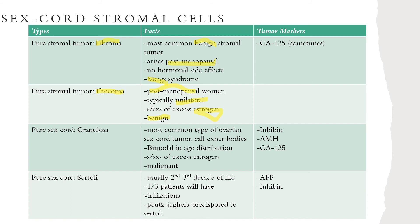The granulosa cell tumor is the most common type of ovarian sex cord tumor. It has a bimodal age distribution with adult and juvenile subtypes. On histology, these tumors present with Call-Exner bodies, and patients can present with signs and symptoms of excess estrogen. These tumors act more malignant and can produce inhibin, AMH, and sometimes CA-125. Sertoli cell tumors are very rare, typically presenting in the second to third decade of life. One-third of patients present with signs of virilization or androgen excess. AFP and inhibin are typically elevated, and patients with Peutz-Jeghers syndrome are predisposed to developing Sertoli cell tumors.